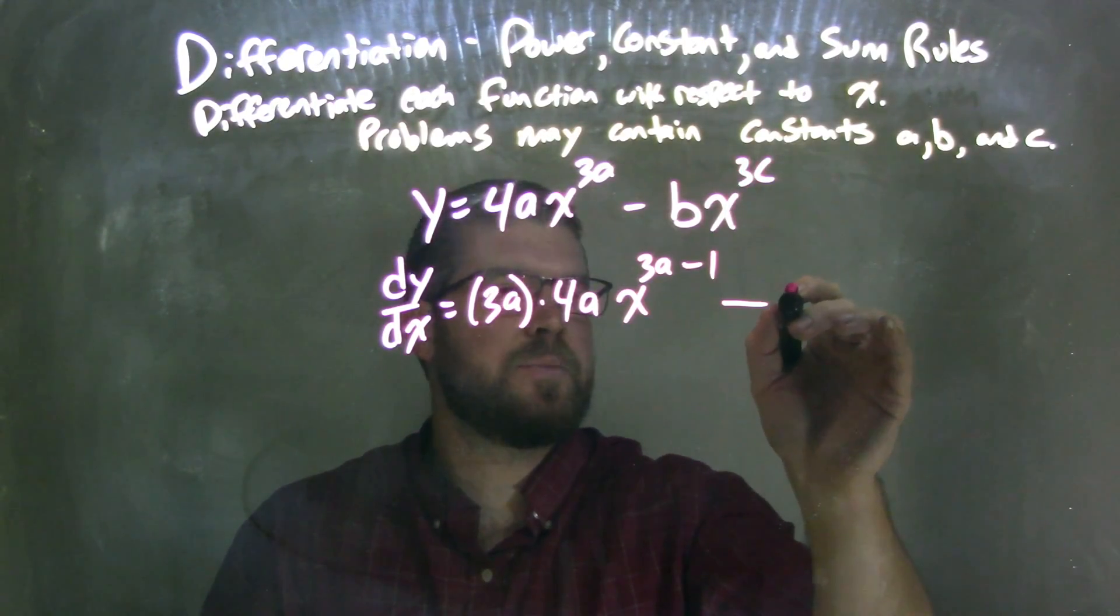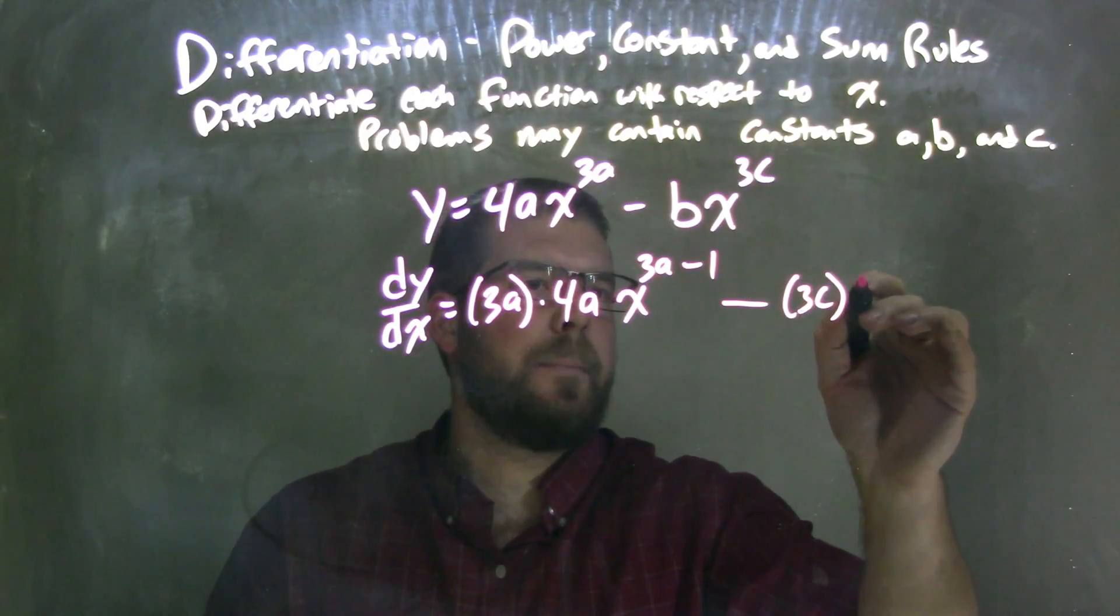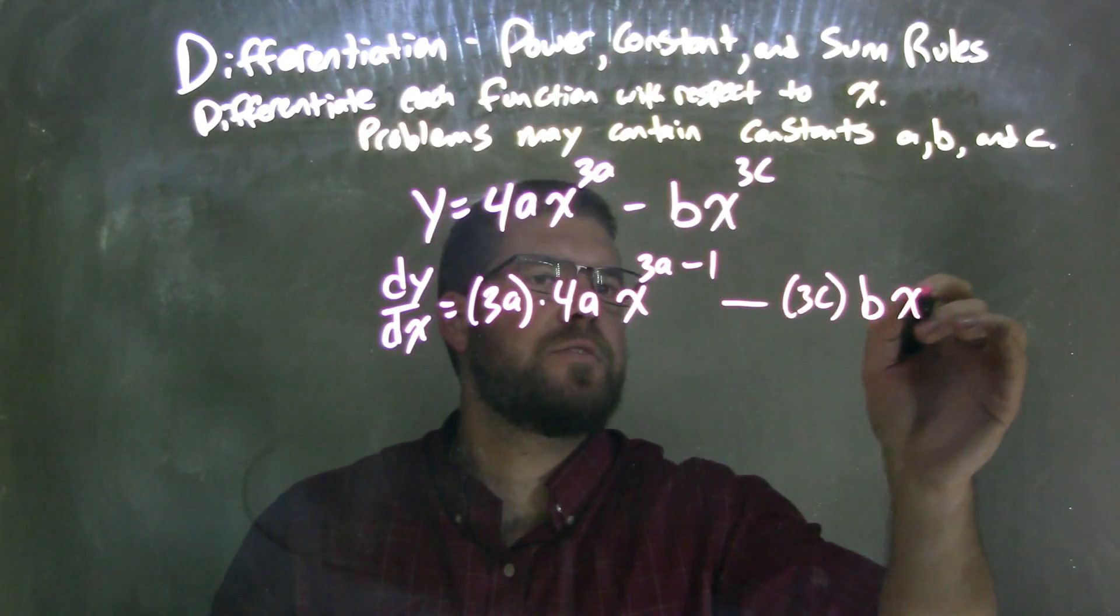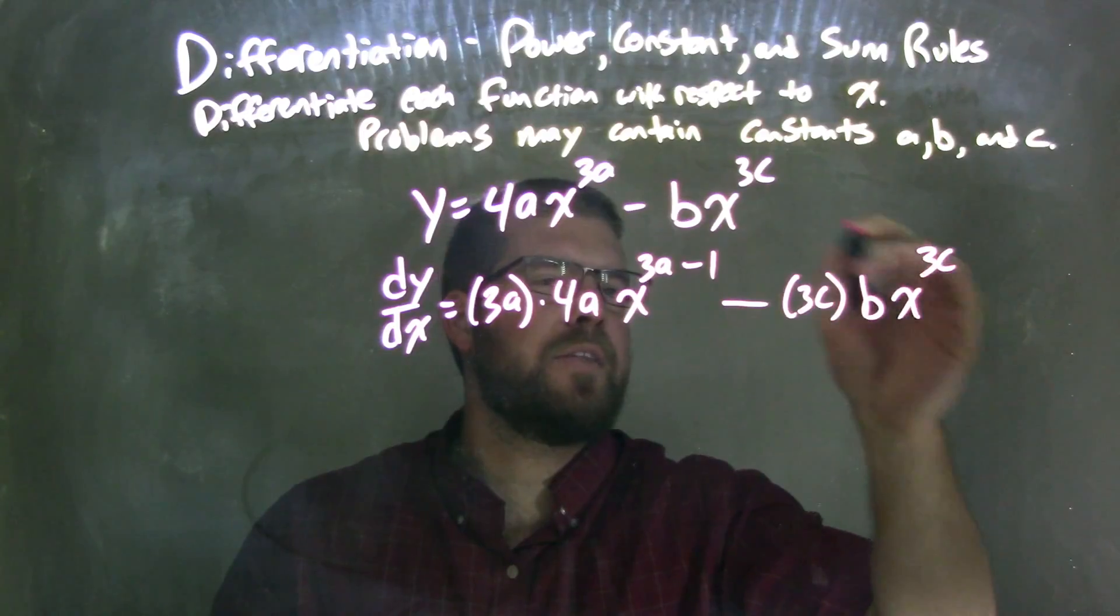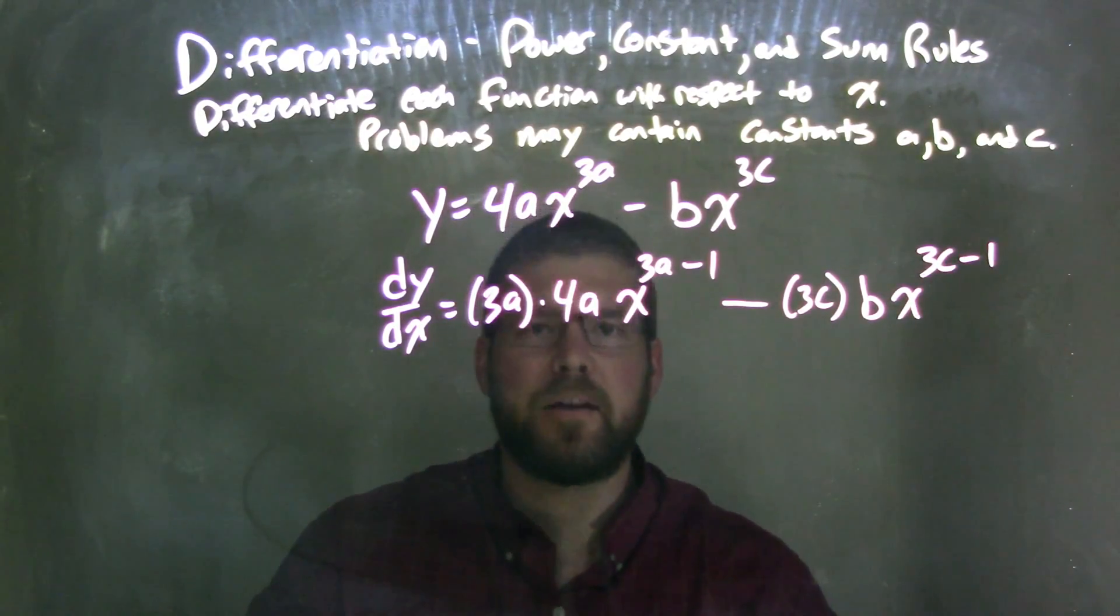I don't know what that constant is, but it's 3 times c, times b, x to the 3c, the exponent, but we solve this to subtract 1 from that exponent.